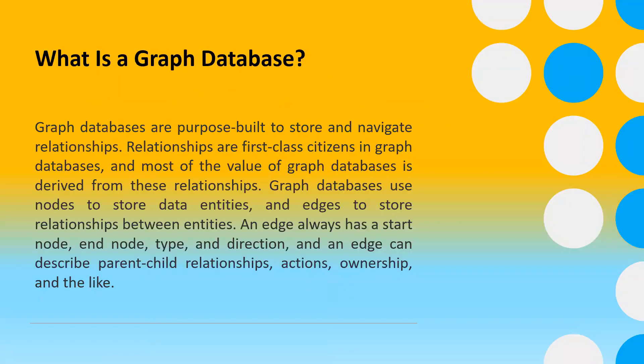What is a graph database? Graph databases are purpose-built to store and navigate relationships. Relationships are first-class citizens in a graph database, and most of the value of graph databases is derived from these relationships. Graph databases use nodes to store data and entities, and edges to store relationships between entities. An edge always has a start node, node type, and direction, and an edge can describe parent-child relationships, actions, ownership, and the like. There is no limit to the number and kind of relationships a node can have.